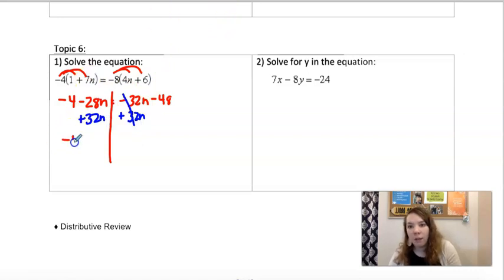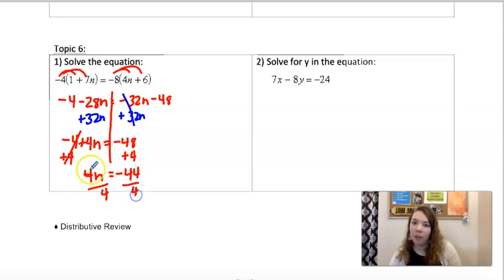So you have negative 4 plus 4n now. Then I'll add 4 to both sides. And divide by 4. So n equals negative 11.